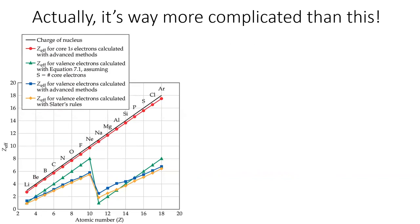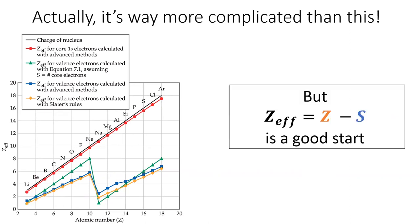Of course, everything I just taught you was a lie, because it's way more complicated than this. However, this simple equation Z_eff = Z - S is a great start for understanding why some elements lose electrons very easily and some elements do not lose electrons.